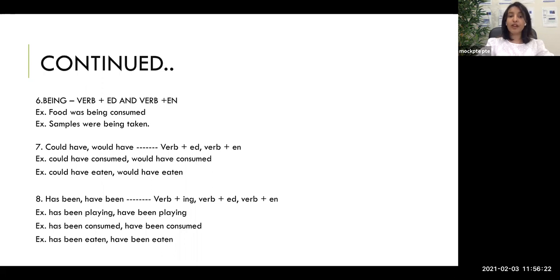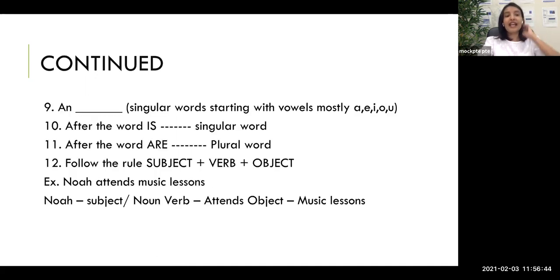The eighth clue: 'has been' or 'have been' will be followed by a verb ending in -ing, -ed, or -en — it could be any of the three. For example: 'has been playing,' 'have been playing' (-ing); 'has been consumed,' 'have been consumed' (-ed); 'has been eaten,' 'have been eaten' (-en). This can be a bit confusing at first, but once you use these rules in practice questions you'll understand better.